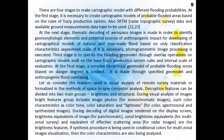There are four stages to create a cartographic model with different flood probabilities. In the first stage, cartographic models of probable flooded areas are created based on user production system rules, using SRTM operator topographic survey data and ground measurements. In the next stage, decoding of aerospace images is performed to identify topological elements and potential sources of anthropogenic impact, based on classification and assessment scales. The third stage specifies the flooding geomodel through overlay operations on cartographic models. At the final stage, a complex hierarchical geomodel of probable flooded zones based on danger degree is created.